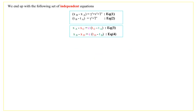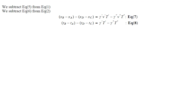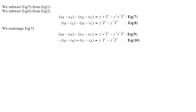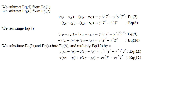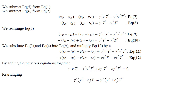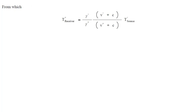We substitute T'' in the previous space and time intervals to obtain the following two equations. We end up with the following set of independent equations. We subtract equation 5 from equation 1, and we subtract equation 6 from equation 2. We rearrange equation 7. We substitute equation 3 and equation 4 into equation 9, and multiply equation 10 by C, adding the previous equations together. Rearranging, we obtain the equation which connects period T' with period T''.